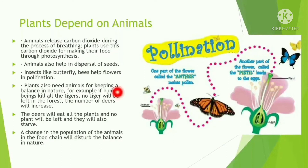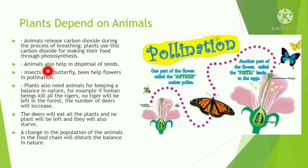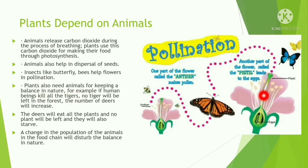Plants also depend on animals. Animals release carbon dioxide during breathing, and plants use this carbon dioxide for making their own food by photosynthesis. Animals also help in the dispersal of seeds. Insects like butterflies and bees help flowers in pollination — they transfer pollen grains from one flower to another.